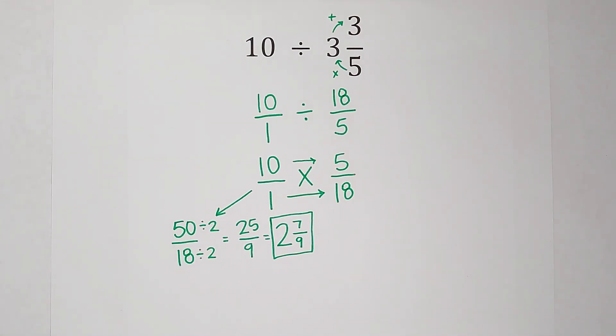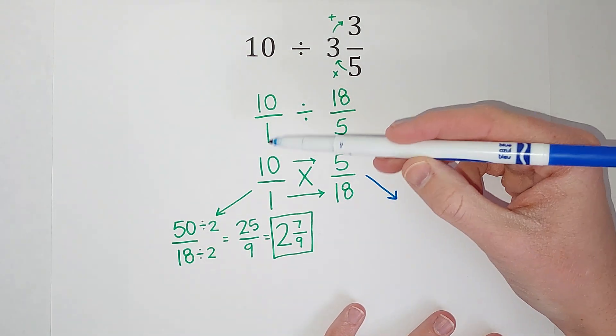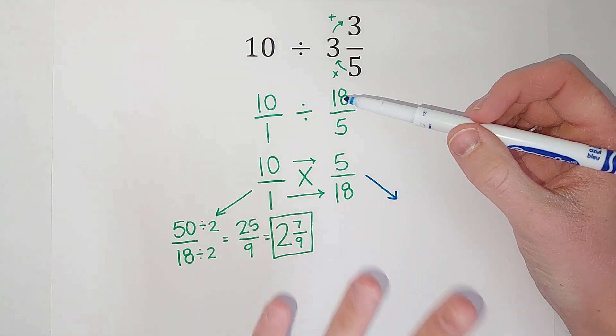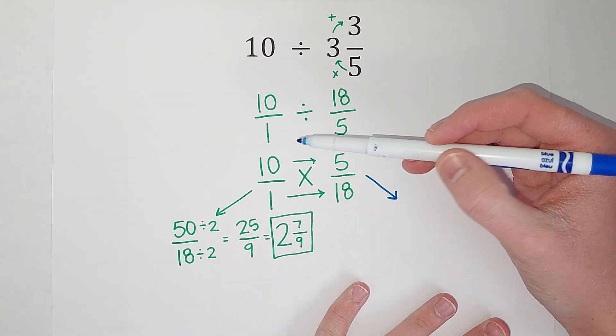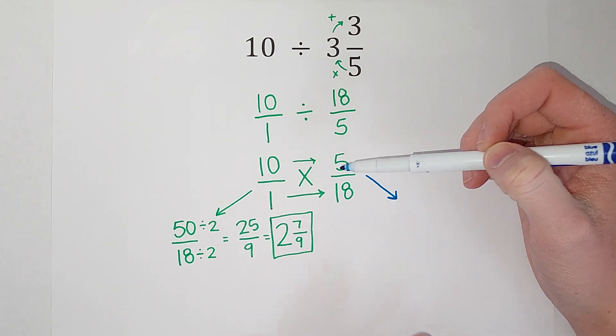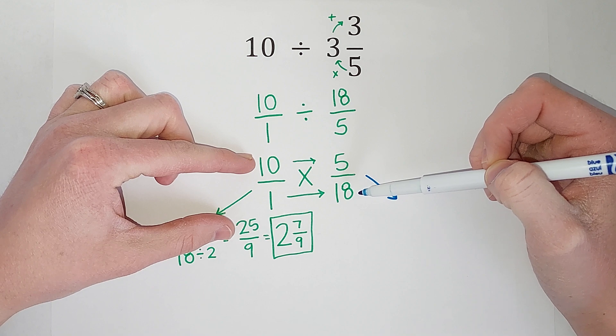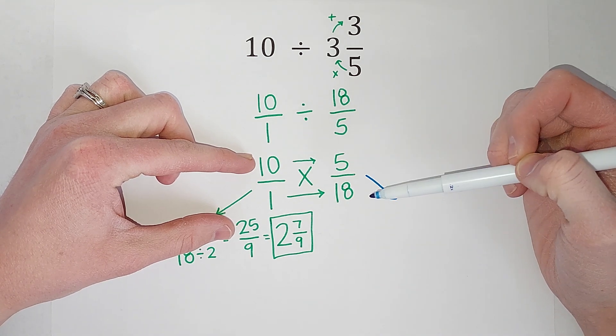But then what if we had noticed we could simplify this first? So we're going to do it again over here. So it's good to get in the habit of when you are multiplying fractions to see if anything on top can simplify with anything on bottom. So if I were doing this, I might notice, oh, 10 and 18 are both even, so I can take 2 out of both of those.